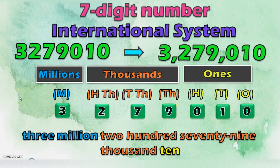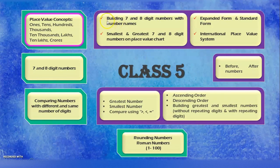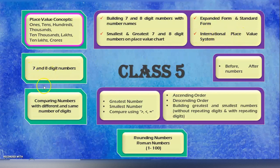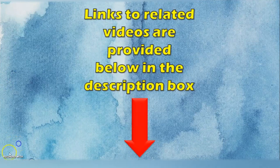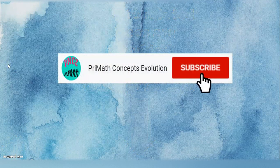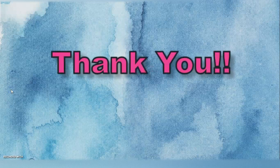Hope you have clearly understood how to arrive at number names for 6, 7, and 8 digit numbers in both the Indian system and International Place Value System. With that we complete all the topics under the place value concept — we covered building 7 and 8 digit numbers with number names, smallest and largest 7 and 8 digit numbers, and writing in expanded form in the first and second videos. This third video covers the International Place Value System. Links to all related videos are provided in the description box. Please subscribe, press the bell button and select all notifications. Give your valuable comments below. Thank you for watching. See you in the next session.